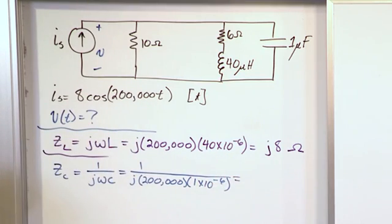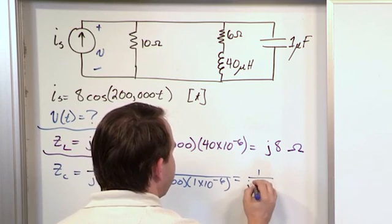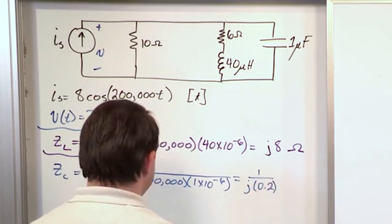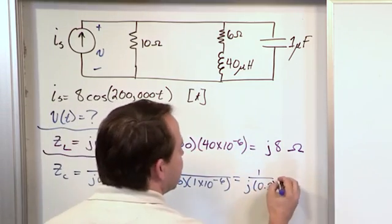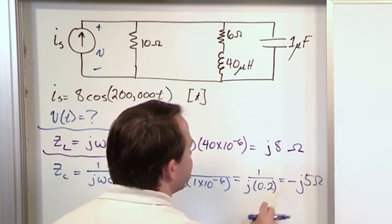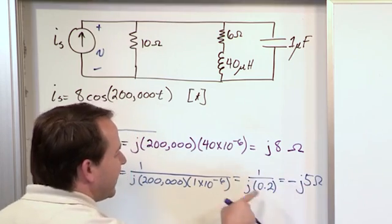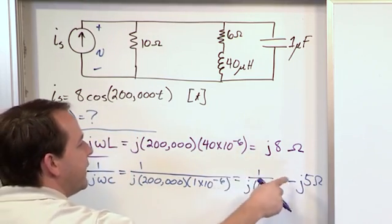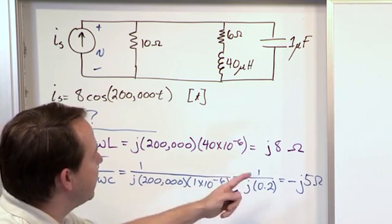Well it looks pretty ugly but then you just multiply these two numbers in your calculator and what you get is 1 over j 0.2 down here. Now generally we want to move it upstairs and get the j up there, so it's going to end up being negative j five ohms. 1 over 0.2 gives me the 5, 1 over j gives me the negative j. I've gone through that several times - you move the j upstairs it becomes negative because we can multiply top and bottom by j, that's what you get.